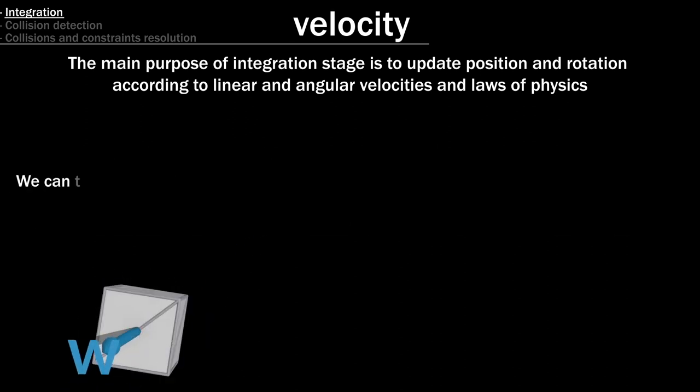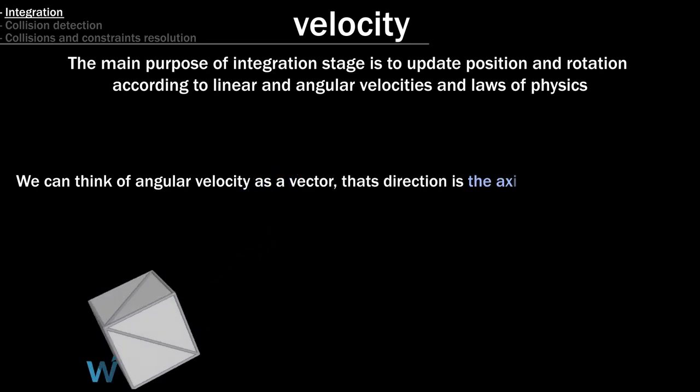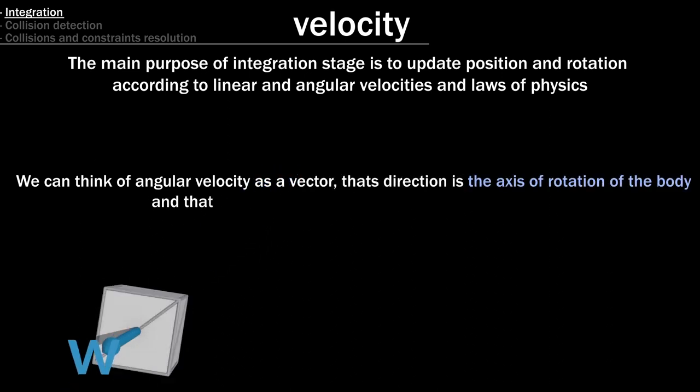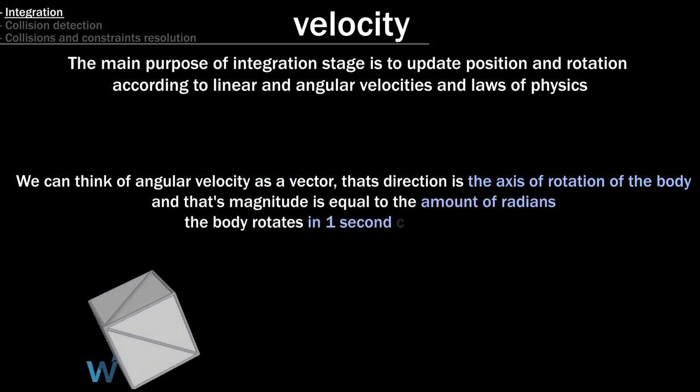Here in 3D, we can think of angular velocity as a vector, whose direction is the axis of rotation of the body, and whose magnitude is equal to the amount of radians the body rotates in one second counterclockwise.